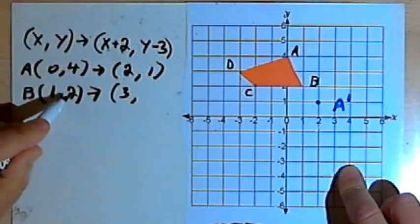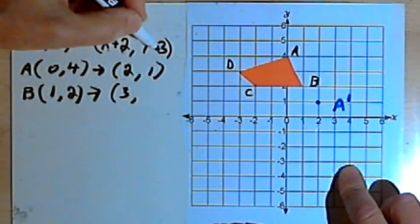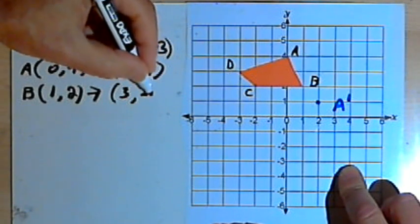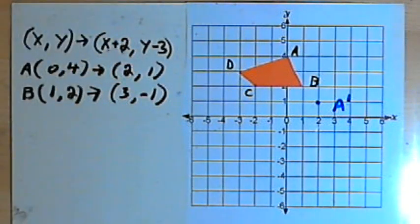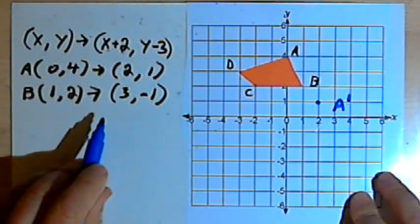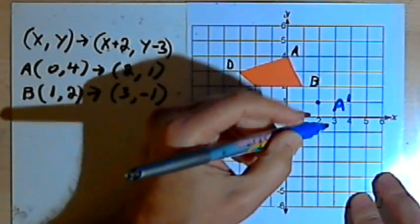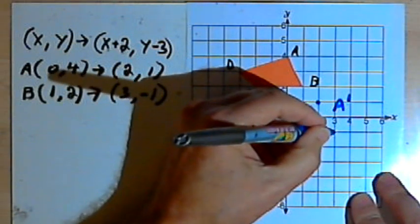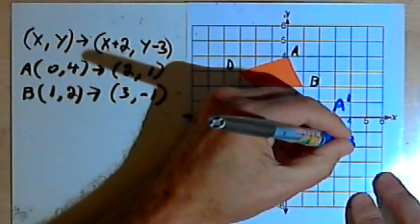The y-coordinate is 2. I've got to subtract 3 from that, so that will become a negative 1. And now I just want to plot (3, -1), and that's going to be point B prime. So there's 3 and negative 1. So now I've got B prime.